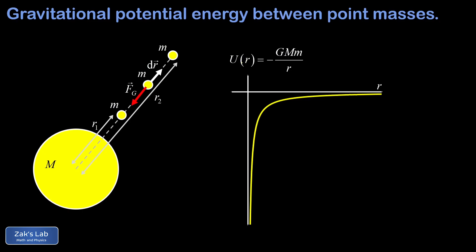Our gravitational potential energy function as a function of separation distance is negative G M m over R, and it looks like this curve. So I see some good things here.